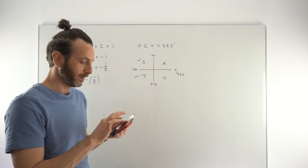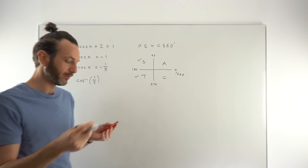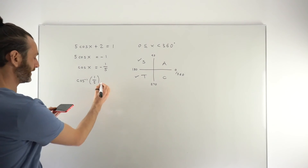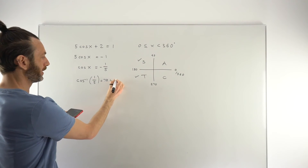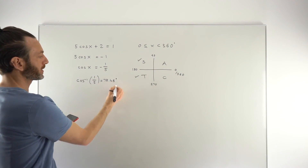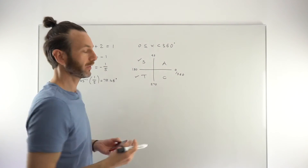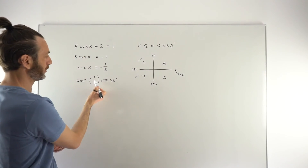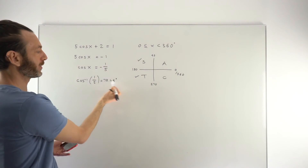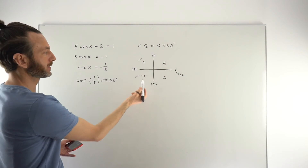Take the inverse cosine of the positive value (drop the negative for the inverse): cos⁻¹(1/5) = 78.46°. This is the reference angle in the first quadrant — it's not the final answer, but it will be used to find the solutions in the correct quadrants identified from the CAST diagram.